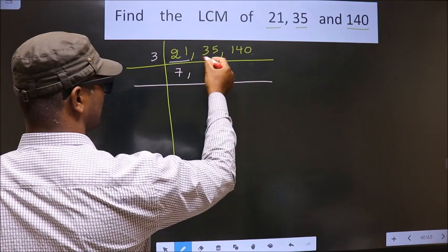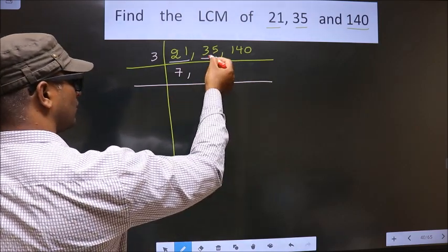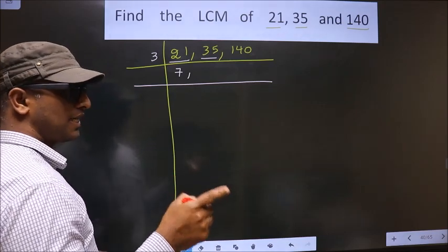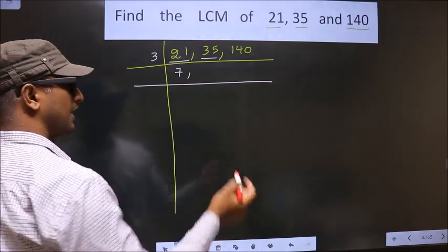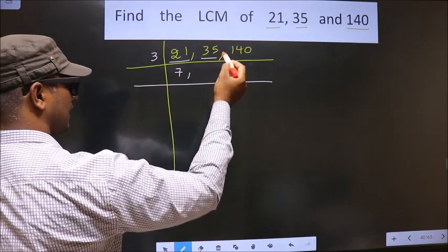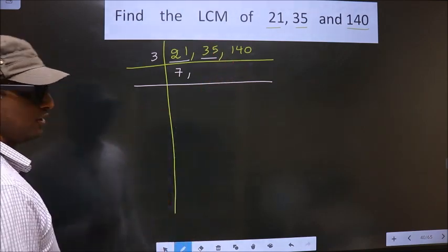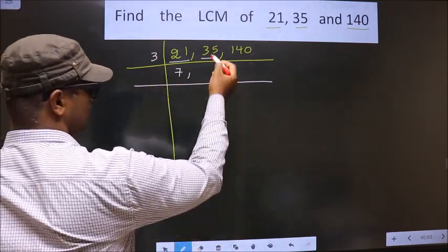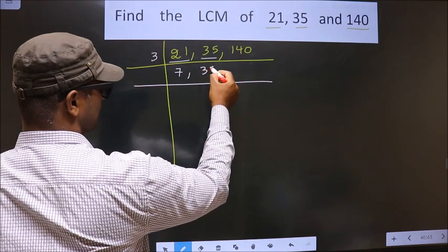Now the other number is 35. How do you check whether this is divisible by 3 or not? For that you add the digits, that is 3 plus 5, we get 8. Is 8 divisible by 3? No. So this number also not divisible by 3. So you write down this number as it is.